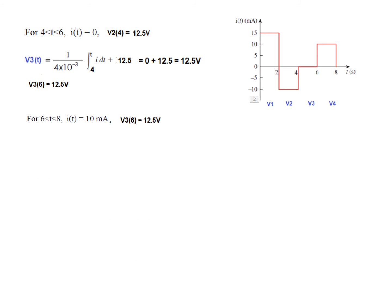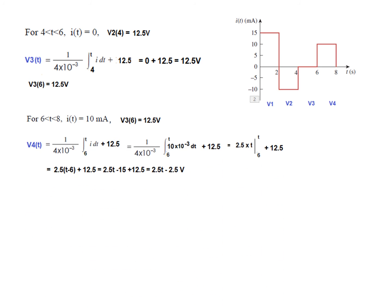For the last part, from 6 to 8, I(T) = 10 mA and V3(6) = 12.5 V. Plugging into the formula with limits from 6 to T and I = 10 mA — 1/C × 10 mA × (T − 6) + 12.5 — solving gives V4(T) = 2.5T − 2.5 volts.